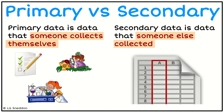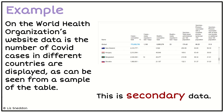So that's our key idea. Here's an example: I've got the World Health Organization's website, and on their website they've got data about COVID cases in different countries. Now this data is secondary data because it's from the website. I've just copied the data from the website, but I didn't physically go and count the number of COVID cases myself — that was done by other people. So that's why it's secondary data.